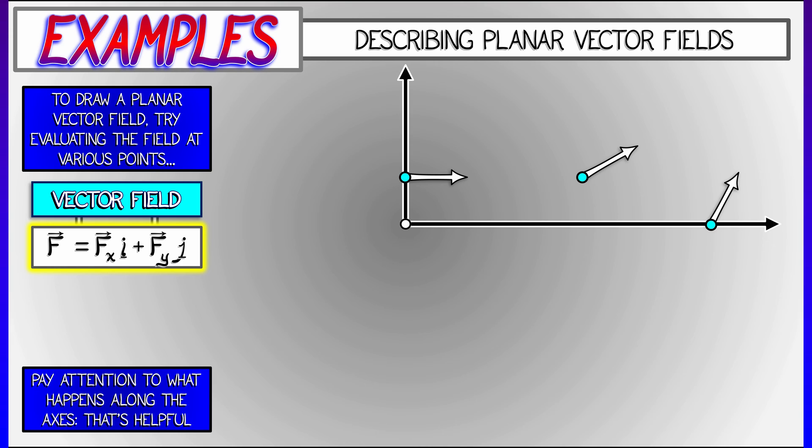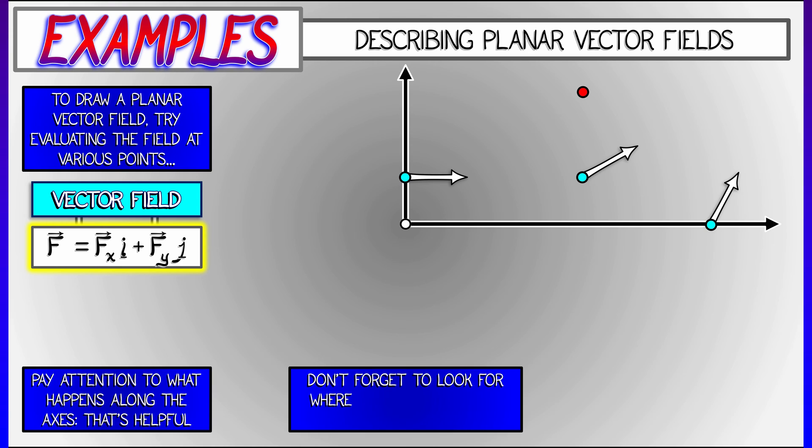Another thing to look out for when trying to draw a picture of a vector field is, are there any places where the vector field vanishes? Where both the x and y components of the vector is zero? Those tend to be really important locations to understanding what the vector field as a whole is doing.